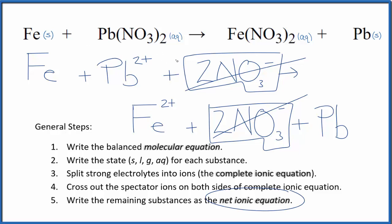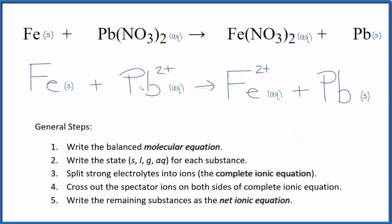Let's clean it up and write the states to get our net ionic equation. This is the balanced net ionic equation for iron plus lead 2 nitrate. You'll notice charge is conserved: on the reactant side we have 2 plus, and on the product side we also have 2 plus. If you count the atoms up, they're balanced as well.